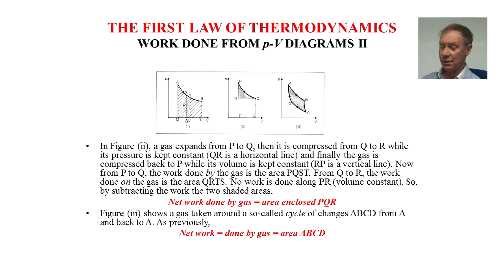No work is done along PR, volume constant. By subtracting the work done from the two shaded areas, net work done by gas is area enclosed PQR. In the third diagram on the right, shows a gas taken around a so-called cycle of changes, ABCD, from A and back to A. As previously, net work equals work done by gas equals area ABCD.